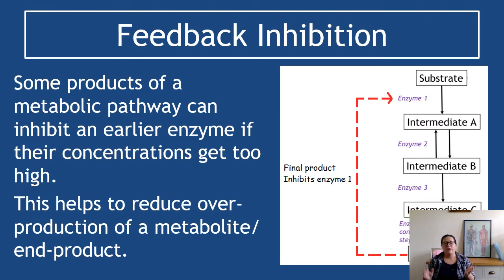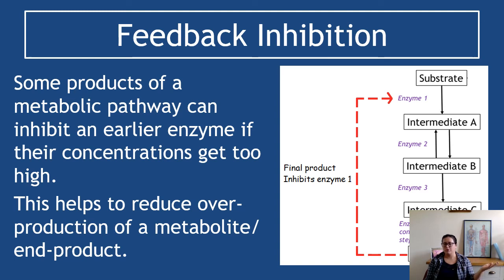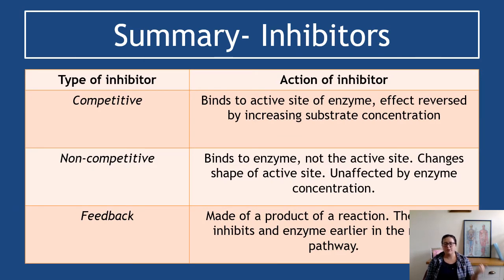Feedback inhibition is where products of a metabolic pathway can inhibit an earlier enzyme if their concentrations get too high. If an end product builds up, it can go back to the start of the reaction and inhibit enzyme one. This means no substrate is converted to intermediate A, and we get less final product produced overall. This is beneficial — we don't want too much or too little of a product being produced.